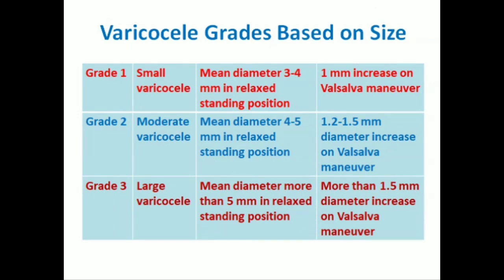Varicocele grading is also based on size. Grade 1, or small varicocele: mean diameter is 3–4 mm in relaxed standing position, or 1 mm increase on Valsalva maneuver. Grade 2, or moderate varicocele: mean diameter is 4–5 mm in relaxed standing position, with a 1.2–1.5 mm diameter increase on Valsalva. Grade 3, or large varicocele: mean diameter more than 5 mm in relaxed standing position, with more than 1.5 mm diameter increase on Valsalva maneuver.